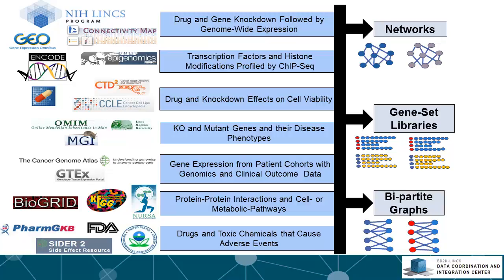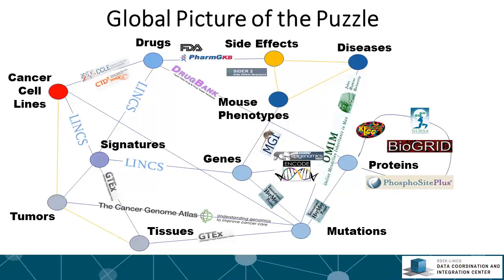All this data can be converted to what we call attribute tables, networks, single entity node networks such as gene-gene association networks or functional association networks, gene set libraries used in enrichment analysis, and bipartite graphs that connect genes to entities. These are just different views of the same data. By abstracting data sets to those structures, the challenge of integrating all of these resources becomes easier and possible.